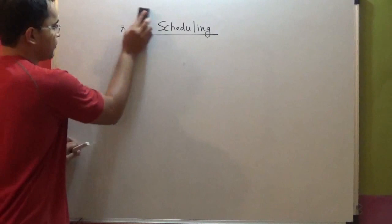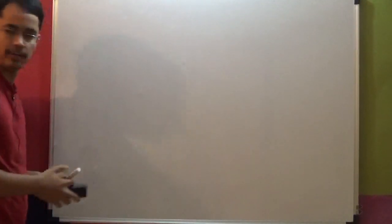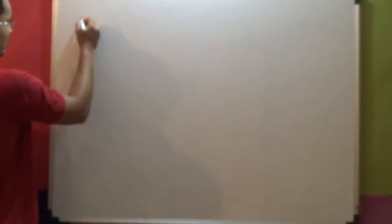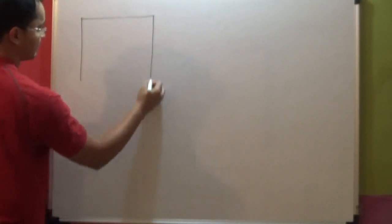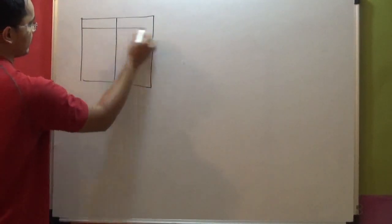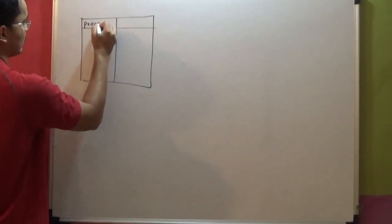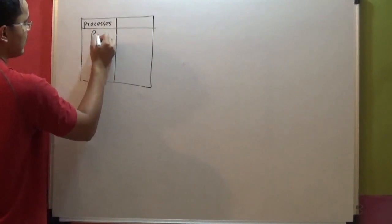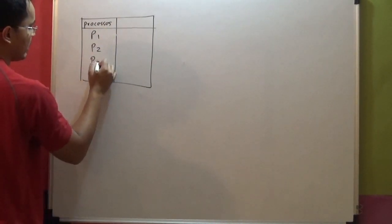Can we have a numerical please? Okay. Processes - I am going to draw the table, right? Processes: P1, P2, P3, P4.